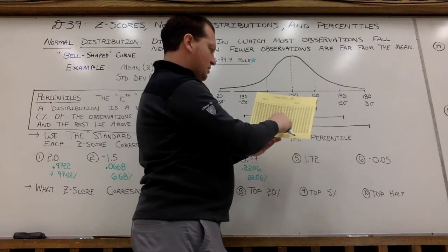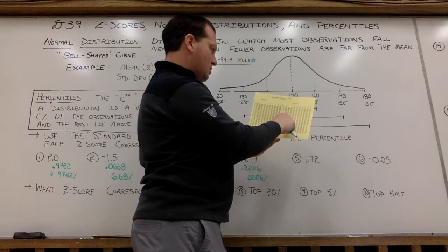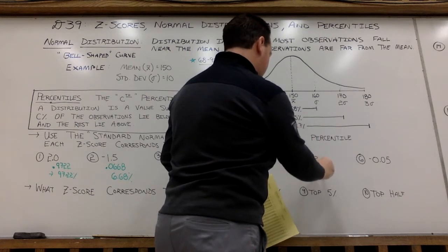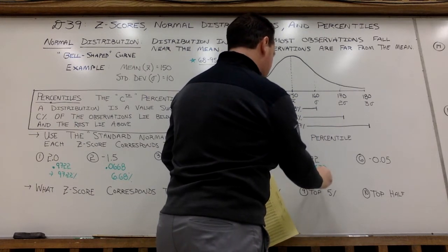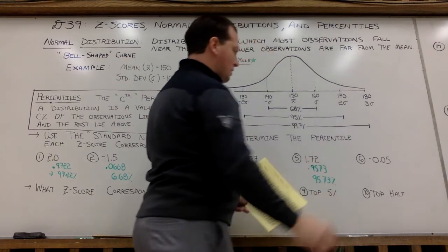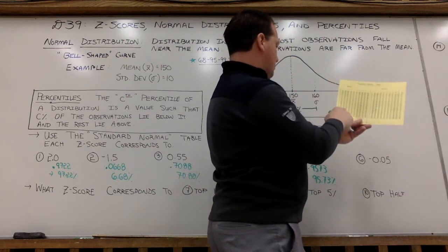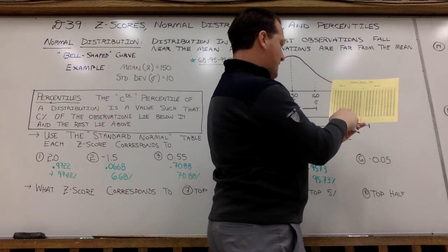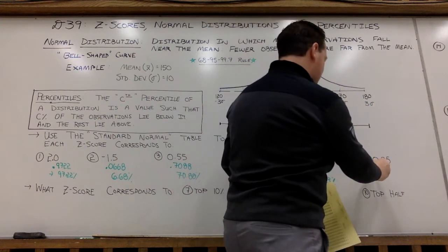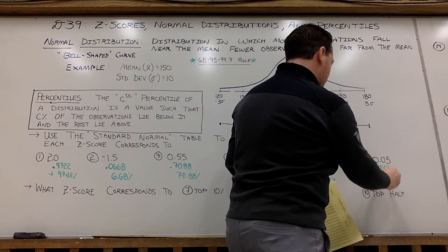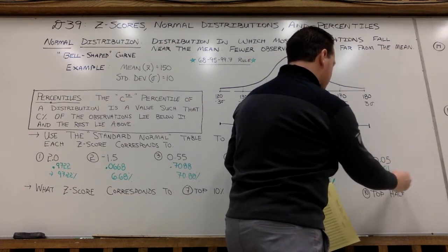Positive 1.72 is 0.9573, so 95.73% would be below. And then negative 0.05 would be 0.4801, so 48.01% would be below.